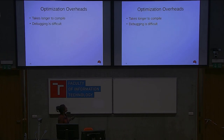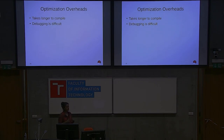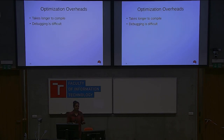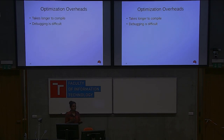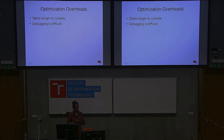The downside of using compiler optimizers is that with so many optimization passes happening, it takes longer to compile. Also, when debugging with GDB, if you try to get the value of a variable in your optimized program, it may say the value is optimized out. Mapping the optimized code directly back to your source code becomes a little tricky, though you can still do it by looking at the assembly code if you're comfortable with that.